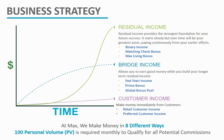As part of the customer income, you have your retail profit, the preferred customer income, the fast start income, the prime bonus, the global pool, the binary income, the matching checking bonus, and the leaving bonus. That means within one business, you will have more than seven streams of income — in fact, eight different ways you can earn monthly.